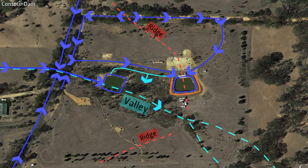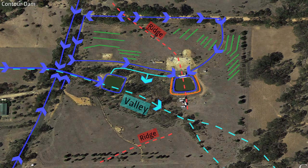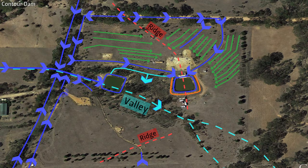Also, the wide-spaced orchard and tree crop systems are following the keyline pattern cultivation geometry, so are aligned to drift water around the ridge during storm events.